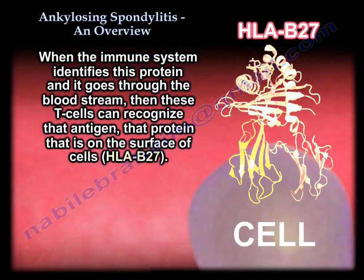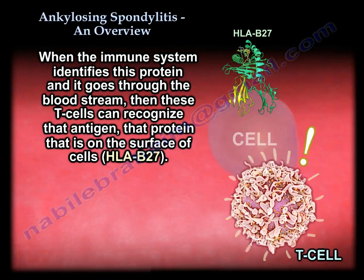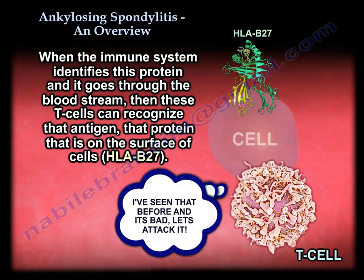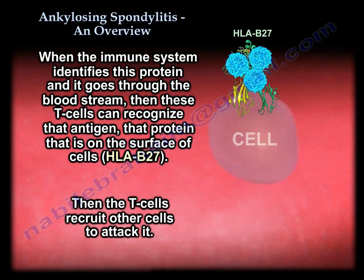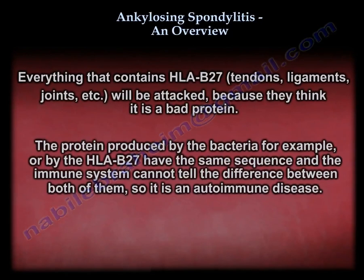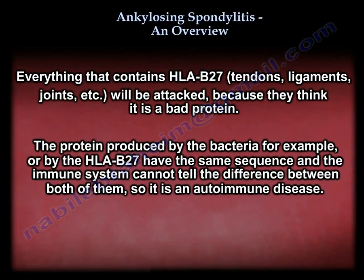When the immune system identifies this protein in the bloodstream, T cells recognize the HLA-B27 antigen on the surface of cells and treat it as a threat, recruiting other cells to attack it. Everything containing HLA-B27 — tendons, ligaments, joints, discs — gets attacked because the immune system cannot distinguish between the bacterial protein and the body's own HLA-B27. This makes ankylosing spondylitis an autoimmune disease.